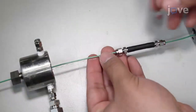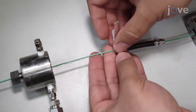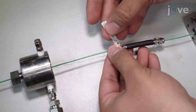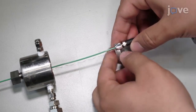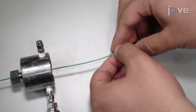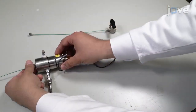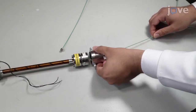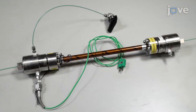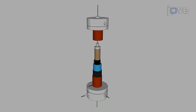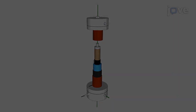Now, place a thermocouple on the base end piece with its tip next to the sample's base. Secure it with aluminum tape. Carefully complete the assembly of the core holder. This core holder assembly is ready for use in the protocol. This schematic provides details of its construction, shown in cutaway.